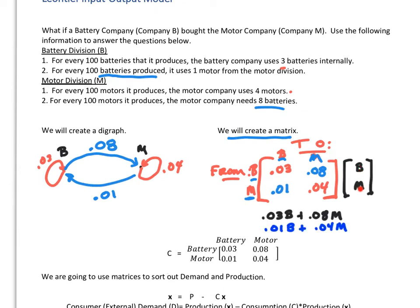So if I take the batteries and motors here and multiply them in this matrix, I'm going to get 0.03B plus 0.08M. This is how many batteries I'm going to be using in order to make a production of whatever number of batteries and motors I'm going to have. This right here is going to be how many motors I have to use up, depending upon how many motors and batteries that are going to be in our system.